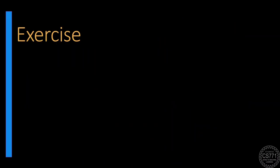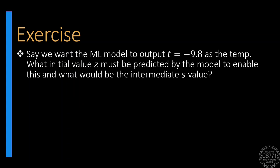Now, at this point, I would like you to take a break and solve this very simple exercise. Instead of 45 degrees, suppose we want the machine learning model to output a temperature of minus 9.8 degrees Celsius. What initial value Z must we start with so that after application of the sigmoid and the scaling and shifting function, we would be able to get the required temperature of minus 9.8 degrees. Think about it.